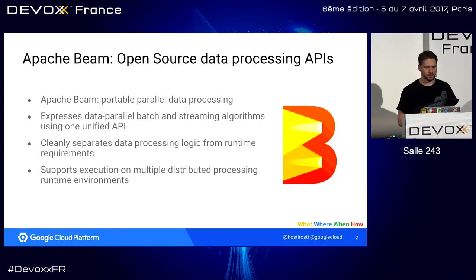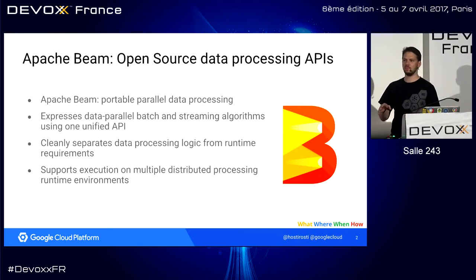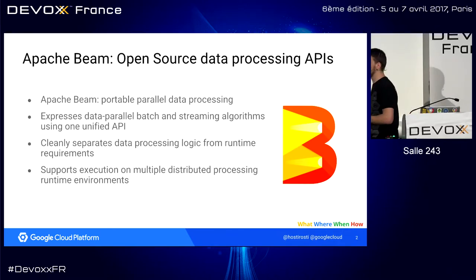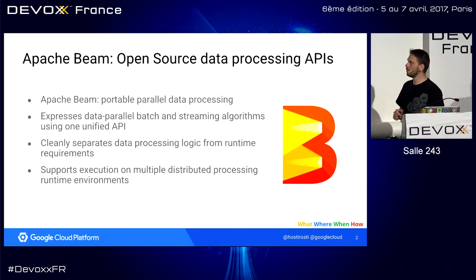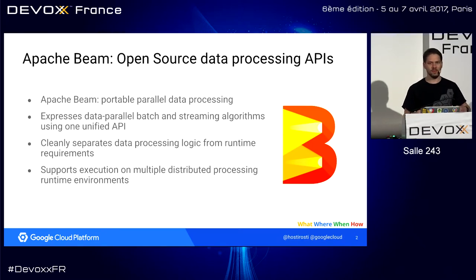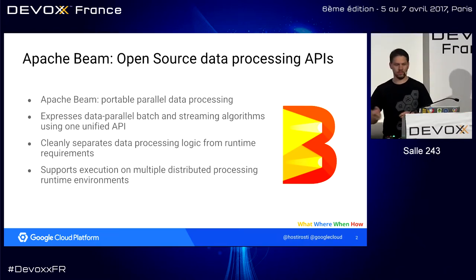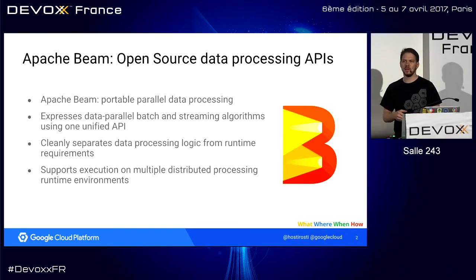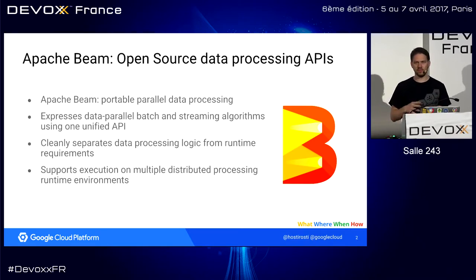So we're talking about Apache Beam. I want to show a little bit about it — who in the room has done something with Apache Beam before? Who has heard about it? Pretty nice. Apache Beam is about portable parallel data processing. We really aim to build one model for both batch and stream processing. It also clearly separates the processing logic — building your pipelines in code — from how and where you run them, since we have multiple different runners.